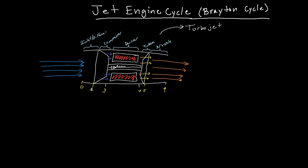What these stations are, are simply ways of labeling the different locations inside the jet engine, so that we can calculate things if we need to and label variables.